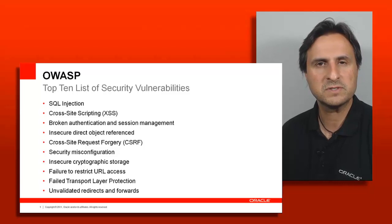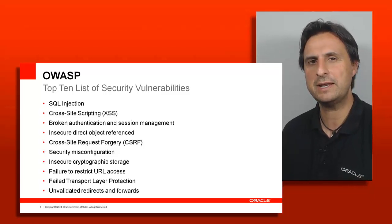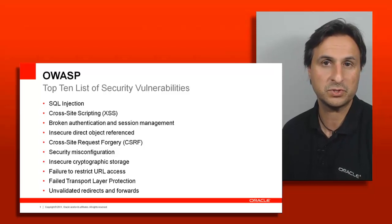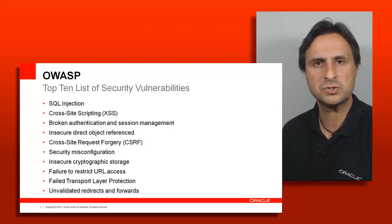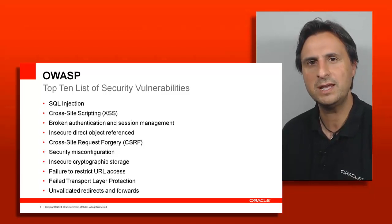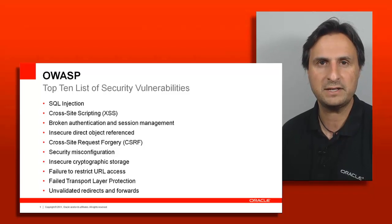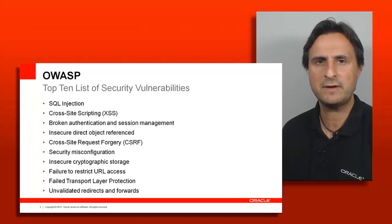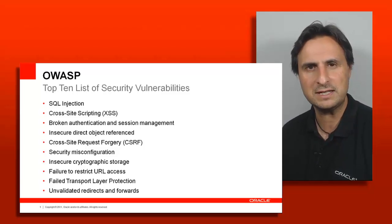Security misconfiguration — for example, switching off security for testing and forgetting to re-enable it before putting the application into production. Failed transport layer security, which is typically HTTPS, or unvalidated redirects where you redirect to an application mimicking single sign-on and assume a request is valid just because a token is present. This is the top 10 in brief; refer to the first recording for the full story.